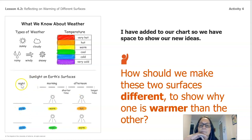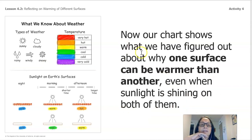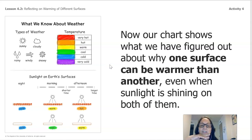Our chart shows what we've figured out about why one surface can be warmer than another, even when sunlight is shining on both. You know that here would be nighttime, morning, and afternoon — different types of temperature. The longer the time in sunlight, the hotter a surface is going to get.